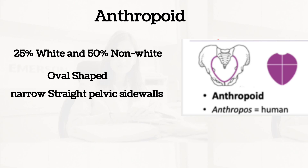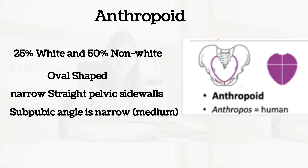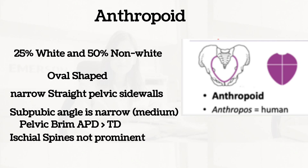Both gynecoid and anthropoid have straight pelvic side walls. The sub-pubic angle is medium-narrow — not entirely very narrow, just medium. The pelvic brim has an anterior-posterior diameter that is greater than the transverse diameter. The ischial spines are not prominent, and the bone structure is medium.